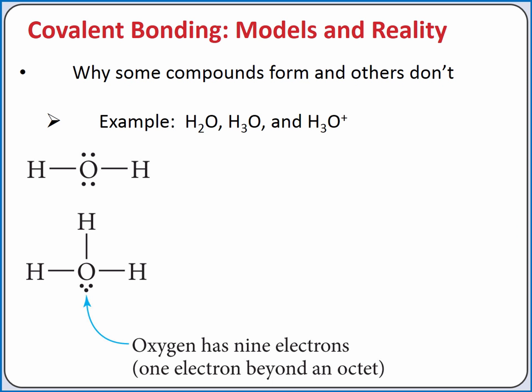oxygen would have nine electrons, which would not be stable. So H₃O does not form. However, if we remove one of the electrons from H₃O, we'll form H₃O⁺. This ion does form. It's called the hydronium ion.